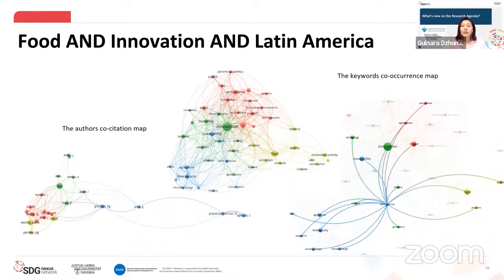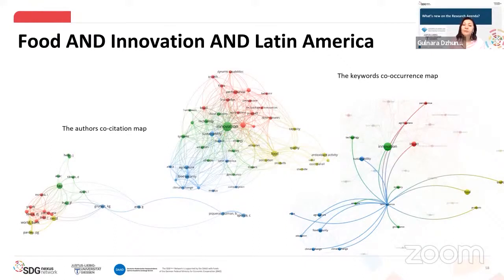The author co-citation map has four clusters. There are three international organizations: FAO in the green cluster, and the World Bank and OECD both in the yellow cluster. In the list of top 10, two authors who were already indicated for the general food and innovation topic appear: Kathleen Eisenhardt and Klaus Grunert. The current network shows four clusters obtained from the mapping of 49 keywords. The green cluster shows a relationship between innovation, technology, and the food industry.